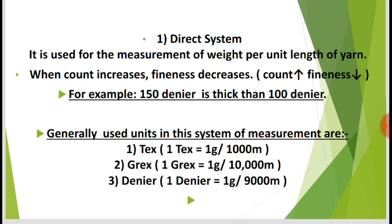One Tex equals one gram per one thousand meters. One Dtex equals one gram per ten thousand meters. Three: Denier — one Denier equals one gram per nine thousand meters.